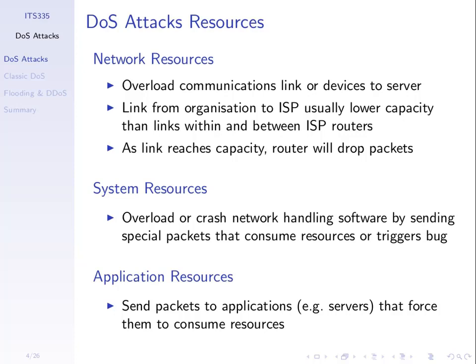We can classify attacks based on what types of resources they attack — what they try to exhaust. It could be network resources. If we're looking at a network, an attacker can try to overload it. We may have a link coming into our web server that has some capacity, say 100 megabits per second. If the attacker tries to send traffic onto that link approaching that capacity, then the normal data from normal users may be delayed or not sent. This exhausts network resources by overloading the links — sending so many packets that the links cannot send all of them.